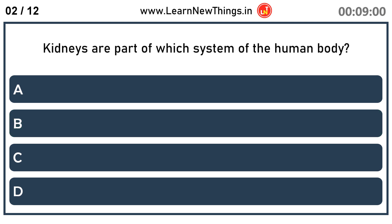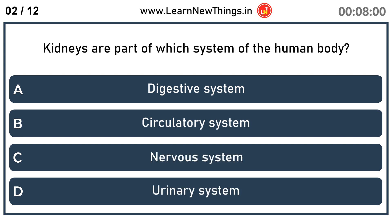Kidneys are part of which system of the human body? Urinary System.